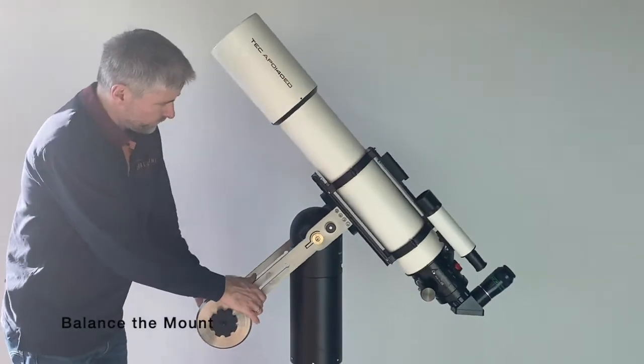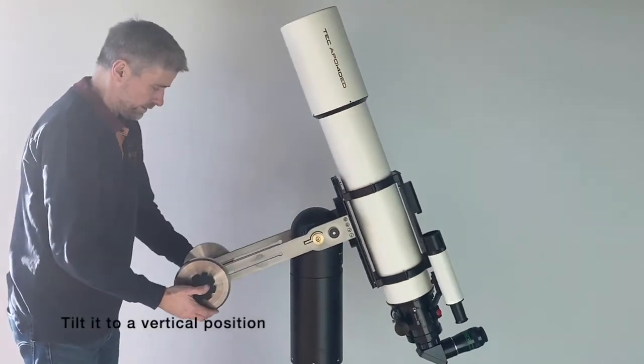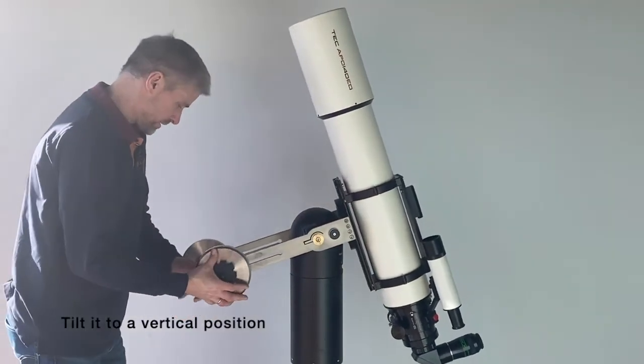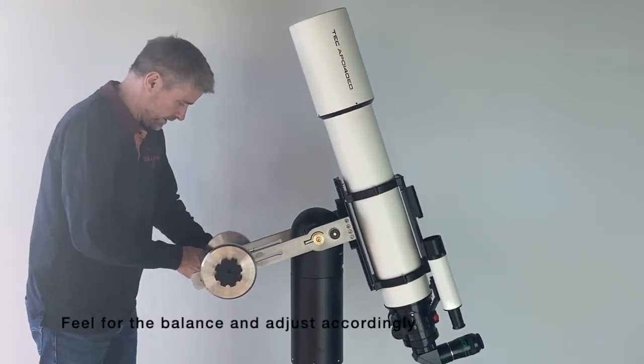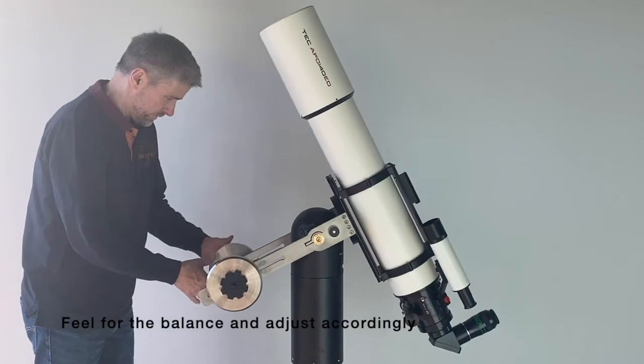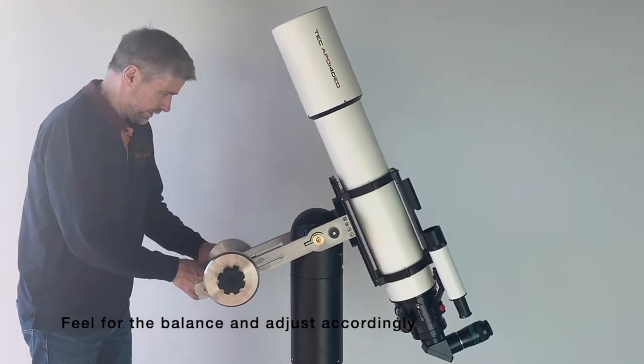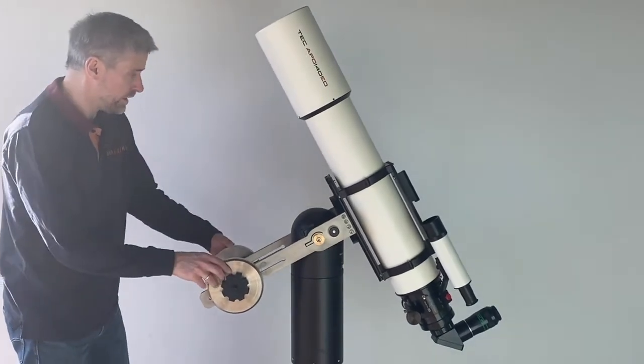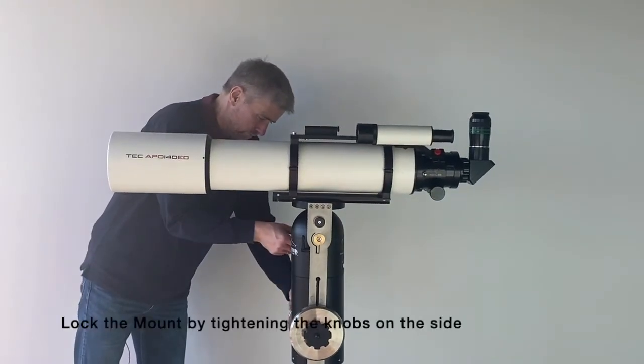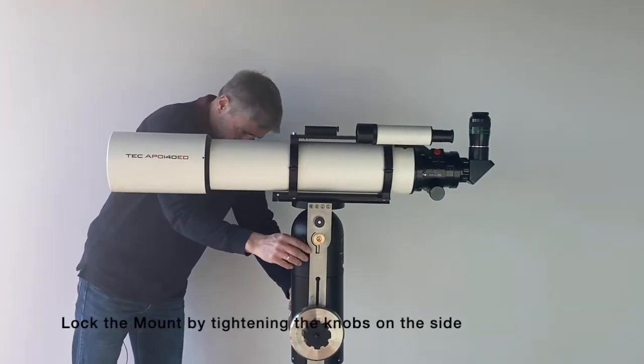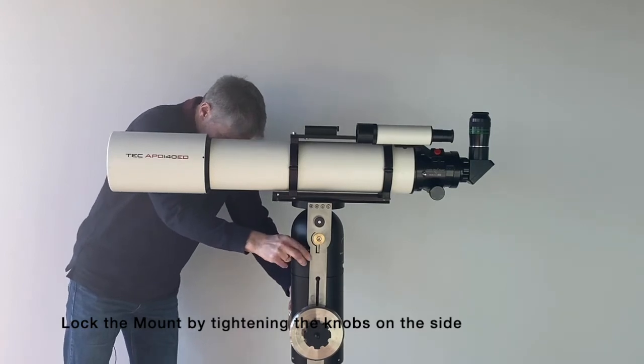Tilt the telescope to a vertical position to balance the counterweight. Slide the counterweights up and down on the arms until you feel the balance is right. Lock the counterweight and finally place the telescope in a horizontal position and lock the two handles for the altitude movement.